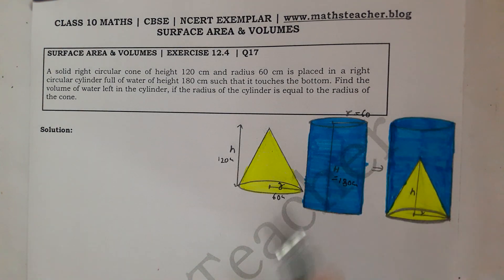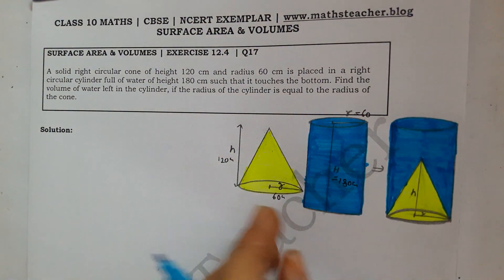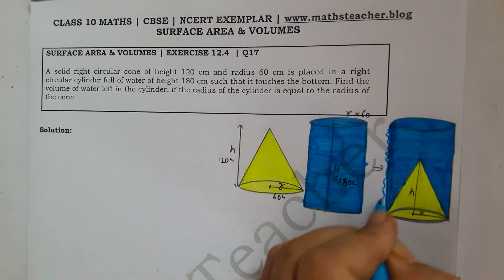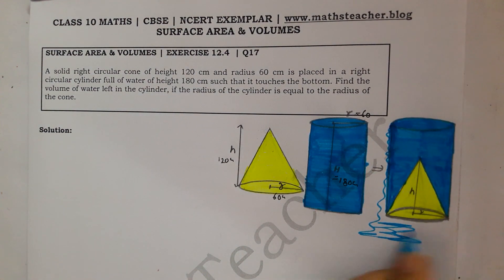Now you know that this is full of water. If you add anything in water, then the water will come out. If you place the cone at the bottom of the cylinder, the water will overflow.